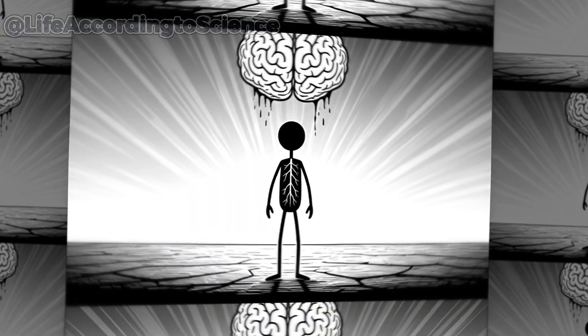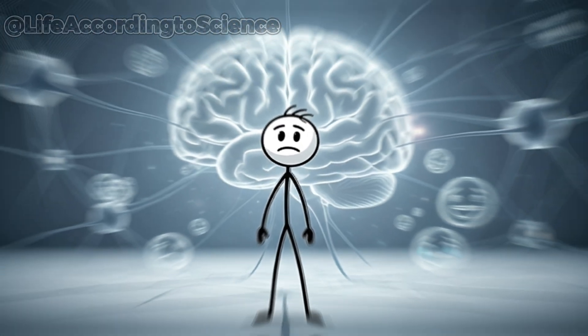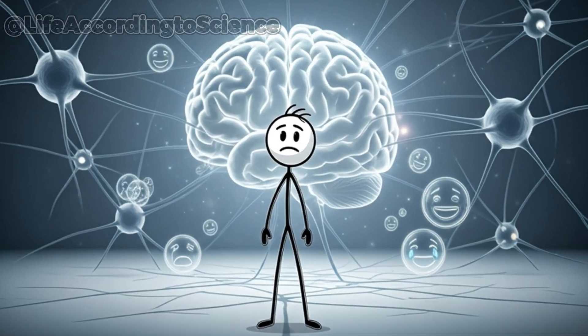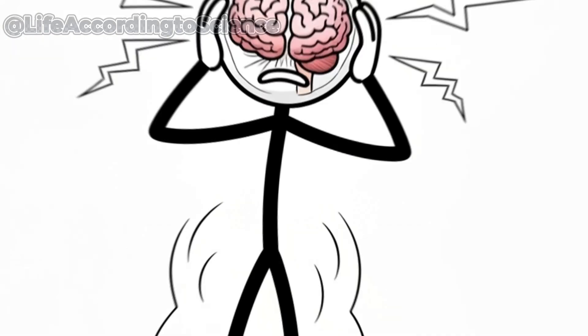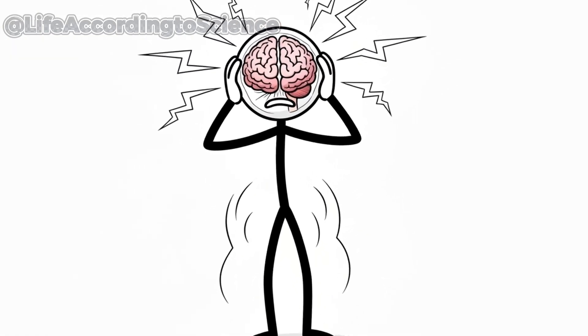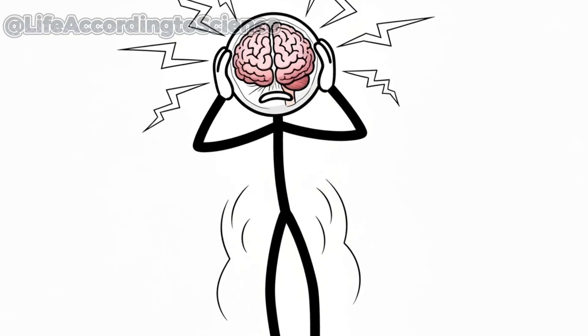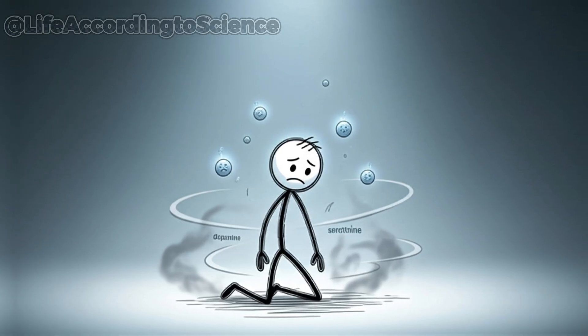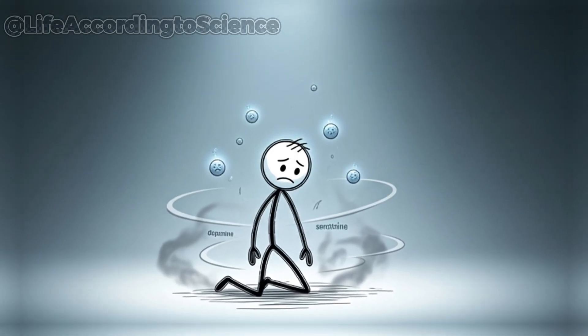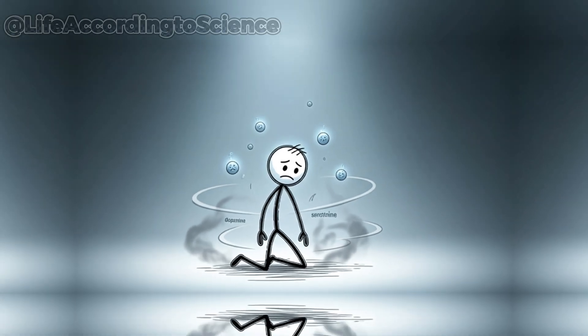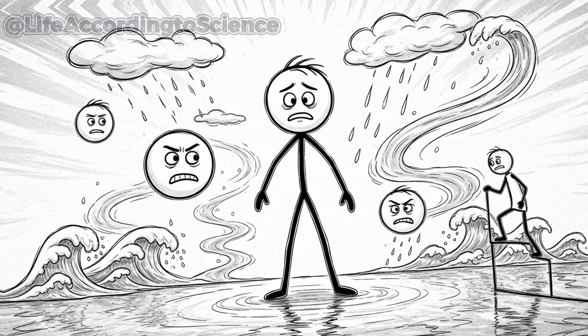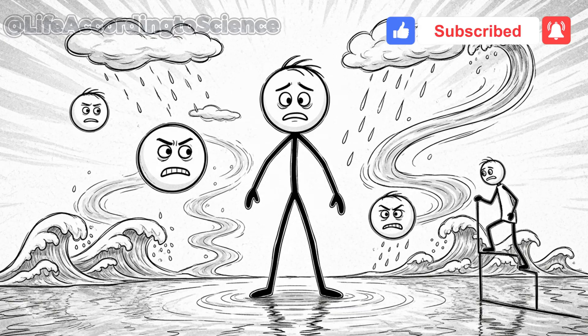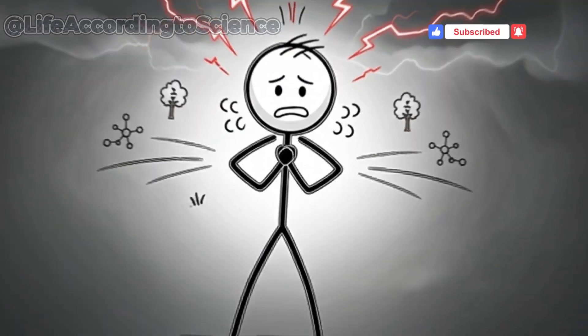When the brain loses water, everything changes—emotions, thoughts, even identity. Dehydration causes the brain to shrink slightly, pulling away from the skull and triggering headaches. Communication between neurons slows down, and dopamine and serotonin, the chemicals of happiness and motivation, plummet. This leads to mood swings, depression, and a sense of impending doom. Decision-making becomes irrational, and the mind may drift into delirium. Some people experience hallucinations of water, rain, or oceans—the brain's last desperate trick to survive.